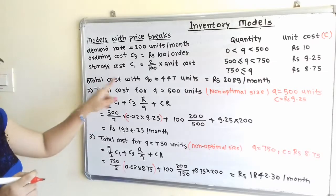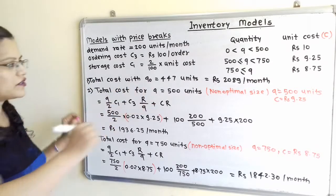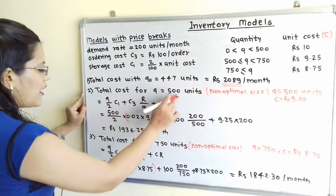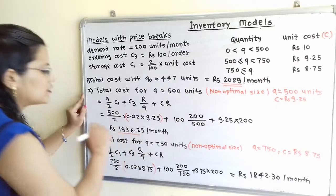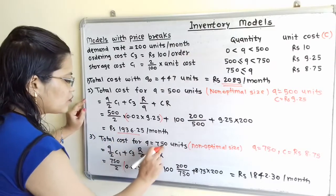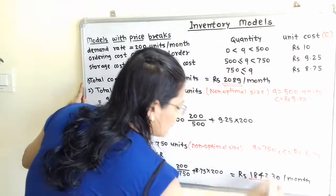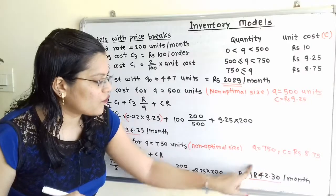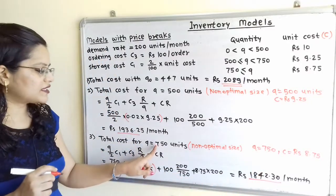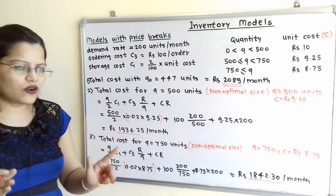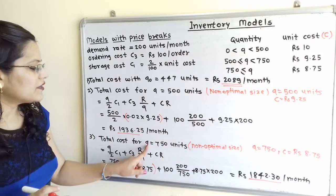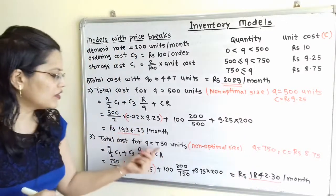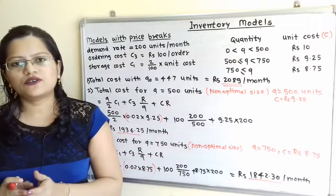Comparing all three costs: Total cost at optimal EOQ of 447 units = Rs.2089; total cost at Q = 500 = Rs.1936; total cost at Q = 750 = Rs.1842. The lowest cost is Rs.1842.30 at Q = 750. Therefore, the optimal order quantity is 750 units.